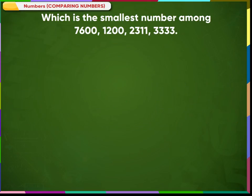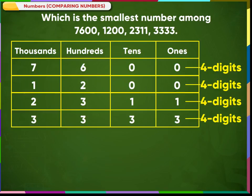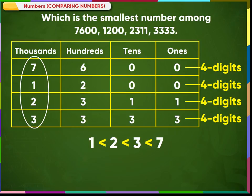Example: Which is the smallest number among 7600, 1200, 2311, and 3333? Place the numbers in the place value chart and compare the digits from left to right. We see that 1 is the smallest digit, so 1200 is the smallest number.